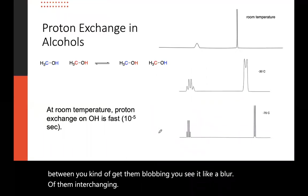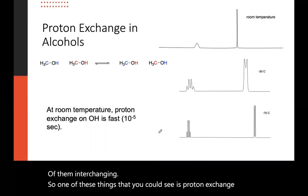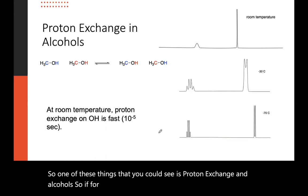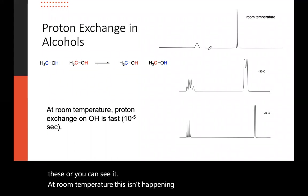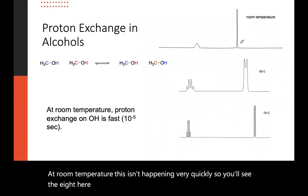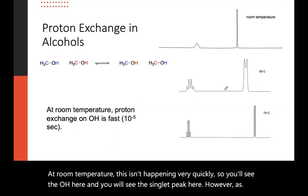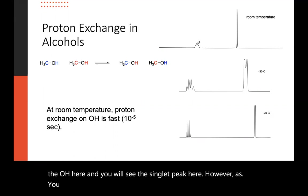So one of these things that you can see is proton exchange in alcohols. So if for one reason somehow or another you've labeled these or you can see it at room temperature, this isn't happening very quickly. So you'll see the OH here and you will see the singlet peak here. However, as you get colder, they start to spread out further because these are exchanging.